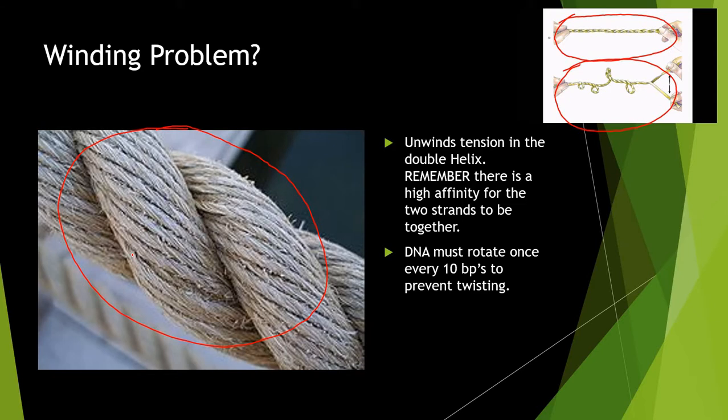Why is the DNA in this form? Because there's a high affinity for the two strands to be together. They have high affinity and it's energetically favorable - less energy. In biological reactions, things prefer to be in the lowest energy state possible. That's why we have the double helix.